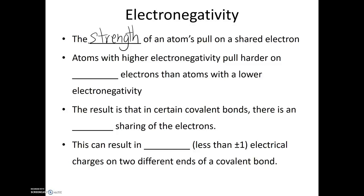Atoms with higher electronegativity pull harder on shared electrons than atoms with a lower electronegativity. The result is that in certain covalent bonds, there is an uneven sharing of the electrons. This can result in partial electrical charges — not quite a full positive charge and not quite a full negative charge, but partial positive and partial negative charges on two different ends of the covalent bond.